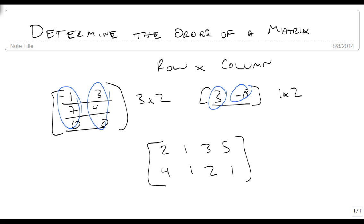then this would be 2 rows by 1, 2, 3, 4 columns, and I get a 2 by 4 matrix.